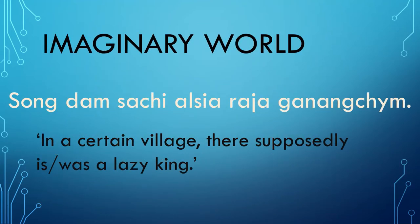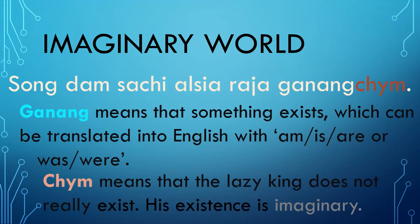We can use Chm to talk about an imaginary reality, as in the sentence: Song Damsachi Al-Siyarajja Ganang Chm. In a certain village there supposedly is or was a lazy king, it is said. Ganang in this sentence means that something exists, which can be translated in English with am, is, are, was, or were. The meaningful part Chm means that the lazy king does not really exist — his existence is imaginary.